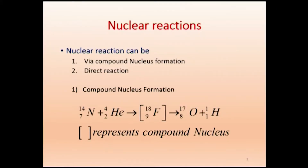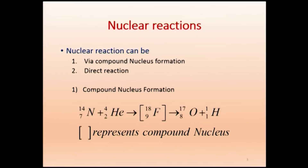To give a background: a chemical reaction involves electrons, whereas a nuclear reaction will involve neutrons and protons. In a nuclear reaction, the nucleus will change — for example, oxygen becomes nitrogen — whereas in a chemical reaction the nucleus does not change. The two types of nuclear reactions are via compound nucleus formation and direct reaction.